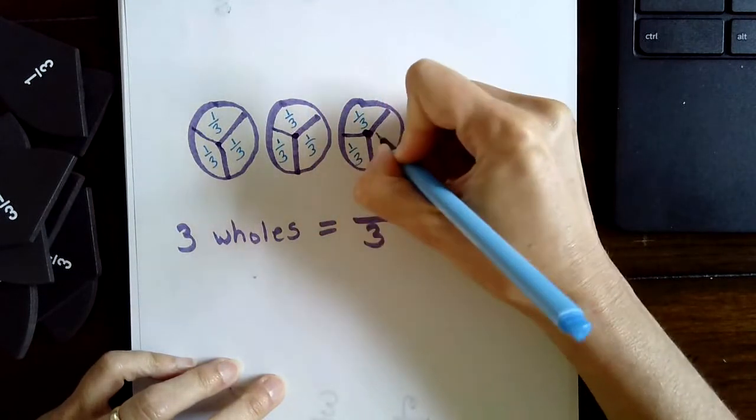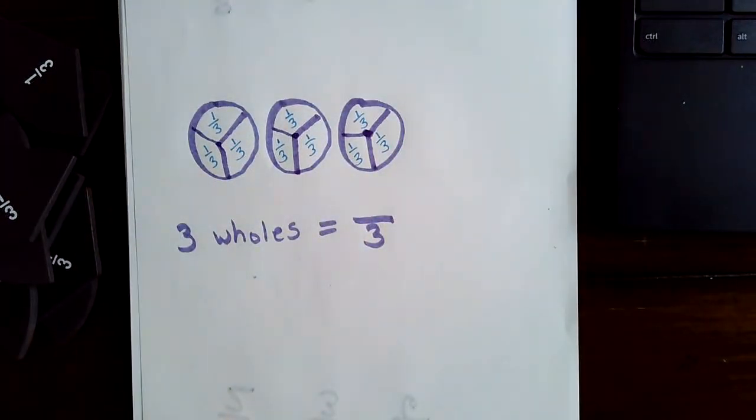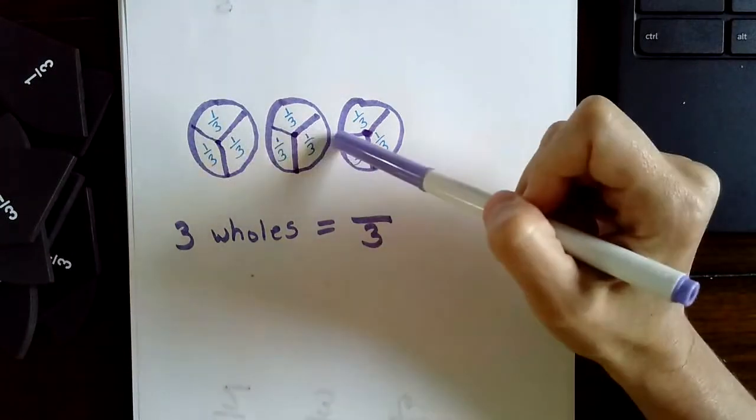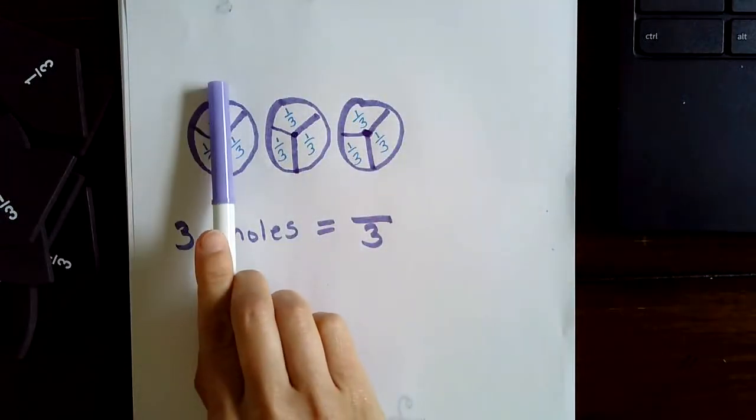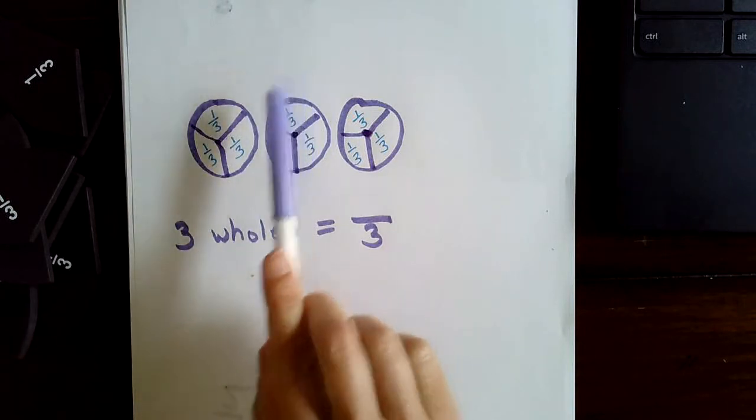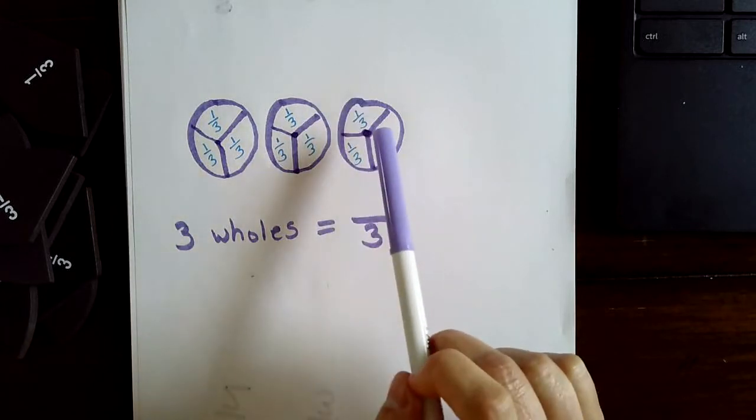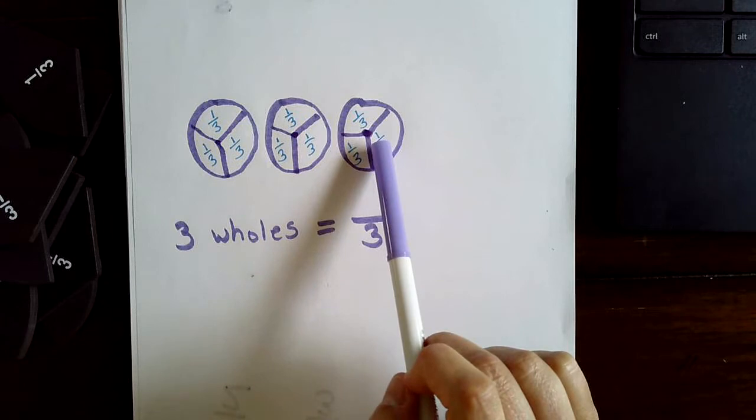Always get in the habit of doing that. And once we get them labeled, we are going to count up the pieces and see how many pieces or how many thirds are in three wholes. We have three thirds here. Now in two wholes, we have six thirds. And then in three wholes, we have nine thirds.